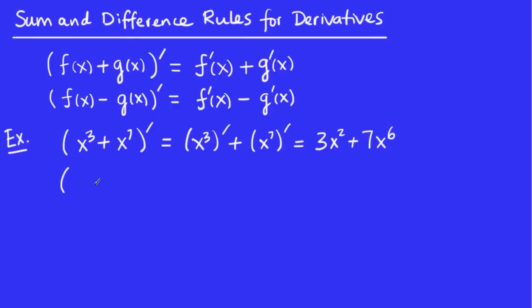What happens if I had something like x plus square root x? Well, according to this rule, it's the derivative of the first plus the derivative of the second. Now, these are two that I've asked you to memorize. Remember, the derivative of x is just 1, and the derivative of root x is 1 over 2 root x.